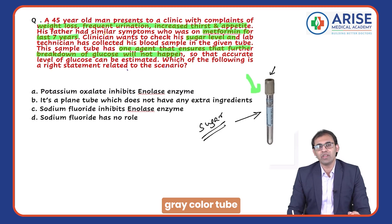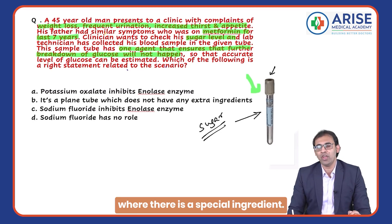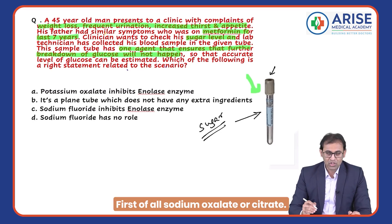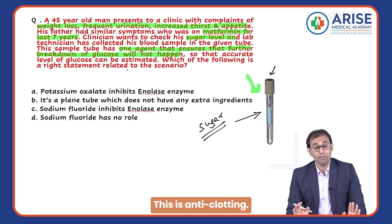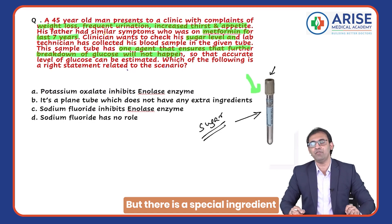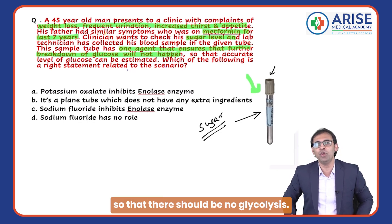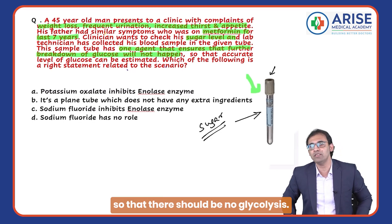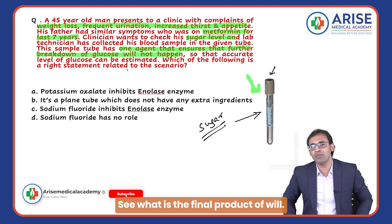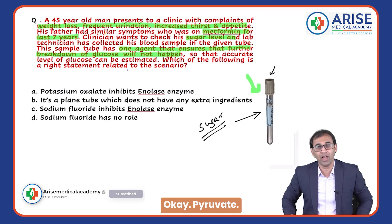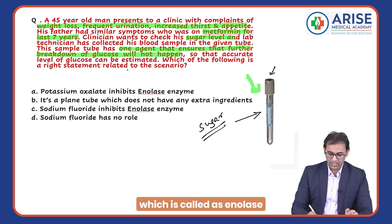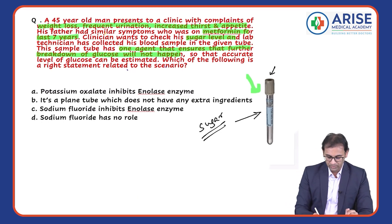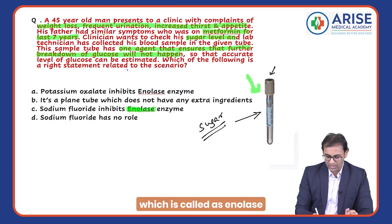That's why we use a special gray color tube. It contains sodium oxalate or citrate as an anti-clotting agent, plus a special ingredient to prevent glycolysis. The final product of glucose metabolism is pyruvate, and the second-to-last enzyme in this pathway is called enolase.